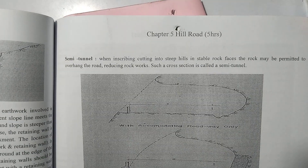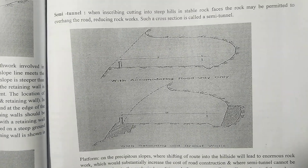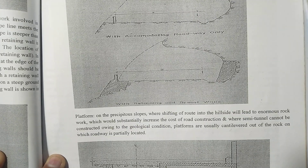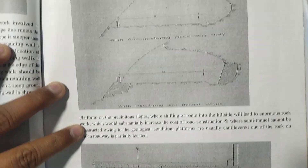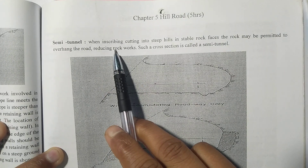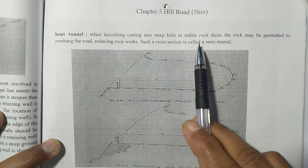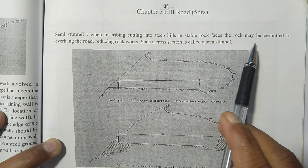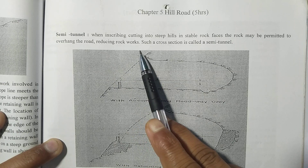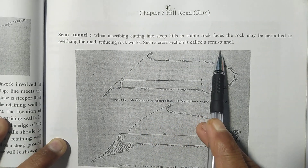The semi-tunnel type is provided when, in steep hill cutting into a stable rock face, the rock may be permitted to overhang the road, reducing rock work. Such a cross-section is called a semi-tunnel.